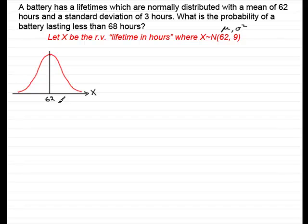And we're looking for the probability of a battery lasting less than 68 hours. So I need to mark in the observed value of 68. So I'm going to mark it over here as 68. So I'm looking for the probability of being less than 68, which is represented by this area here. So I'll just shade that in very quickly for you. Alright, so that's that area there.